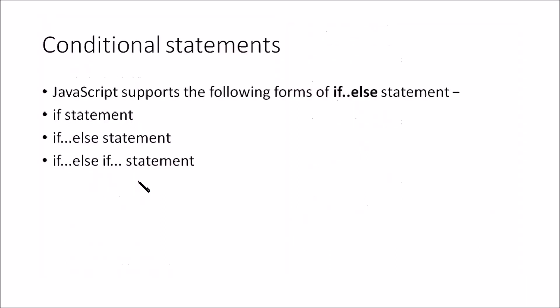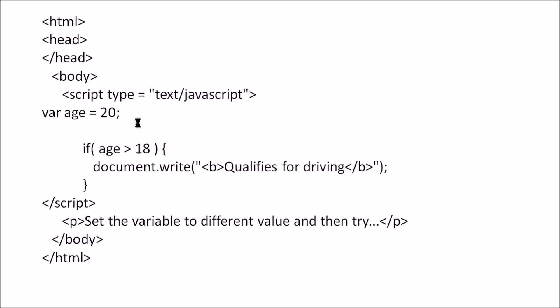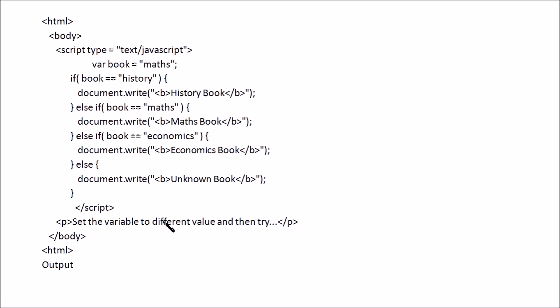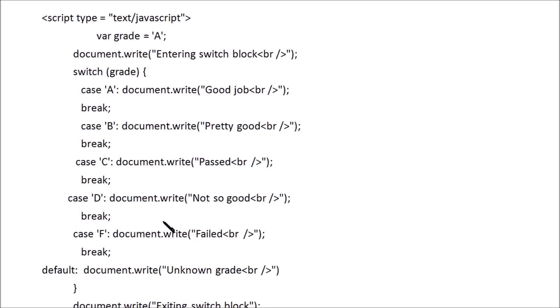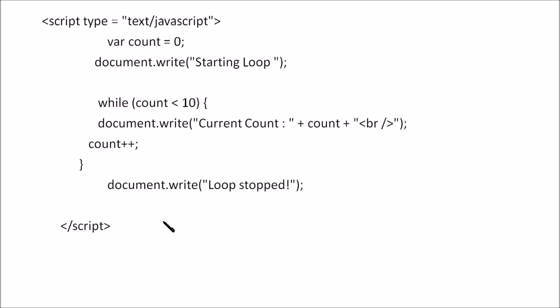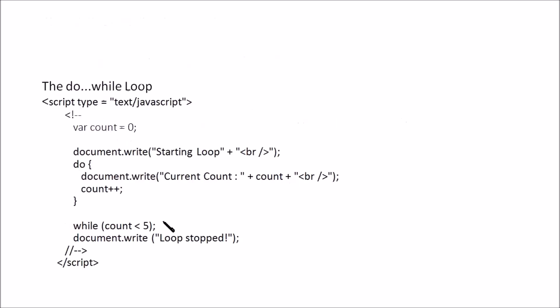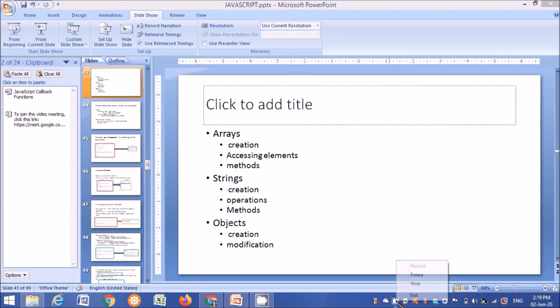Regarding conditional statements, if, if-else, and else-if statements are available. Here is an example of if-else: age is assigned the value 20, and if age is greater than 20 the result shown is 'qualifies for driving'. You can similarly use else-if. Switch-case is also available in JavaScript. While loop and do-while loop are available as well. This portion will be explained in more detail in the next video lecture.